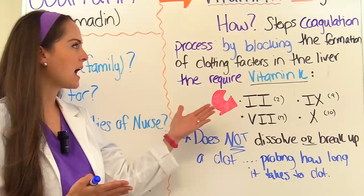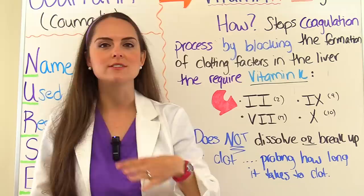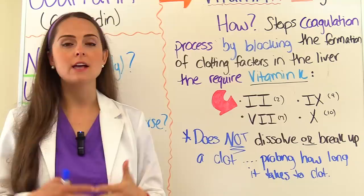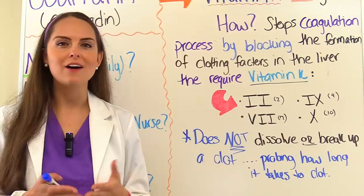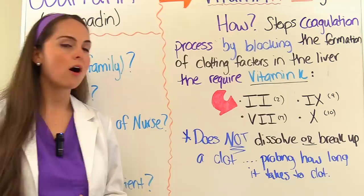Warfarin works as an anticoagulant by blocking the formation of clotting factors that require vitamin K — specifically clotting factors 2, 7, 9, and 10. An important thing to remember and educate your patient about is that warfarin does not dissolve or break up an existing clot. What it does is prolong how long it takes the blood to actually form a clot.